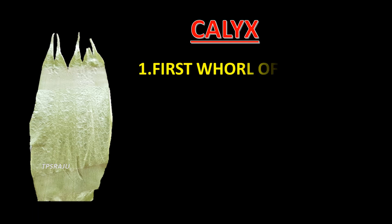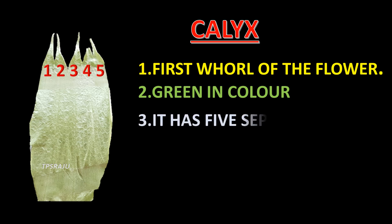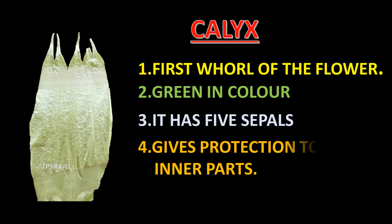This is the calyx, the first whorl of the flower. It is green in color and has five sepals. The calyx provides protection to the inner parts of the flower.